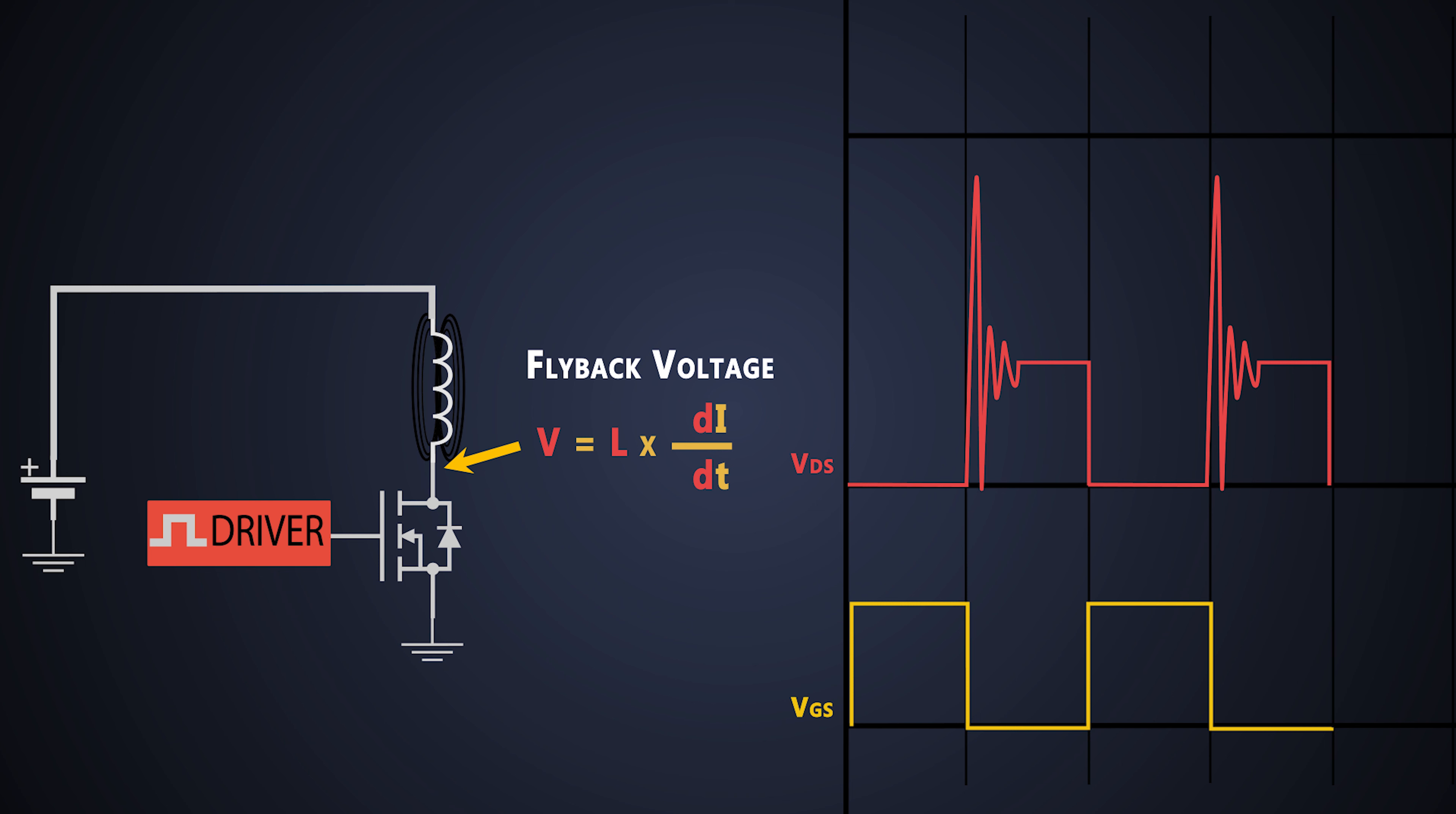So when the MOSFET turns off, this flyback voltage and the supply voltage adds up at this point and we get the huge spike across the MOSFET. After some point, this drain to source voltage comes back to the supply voltage. To minimize this, we need to find a way where the energy stored in the inductor should dissipate or be sent back to the supply.